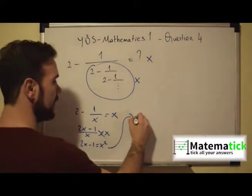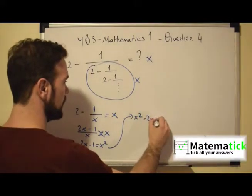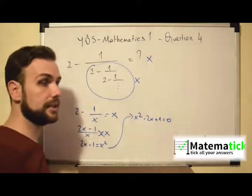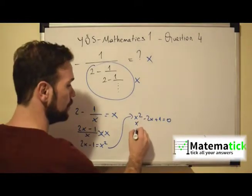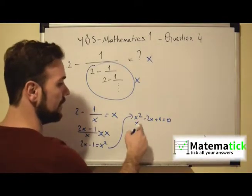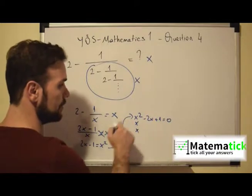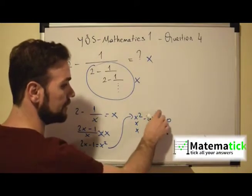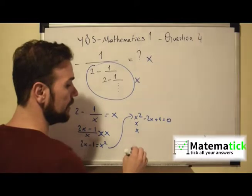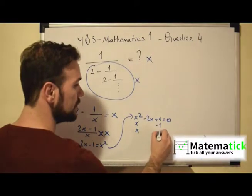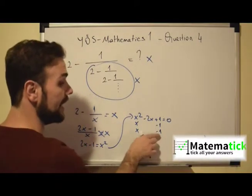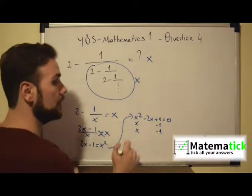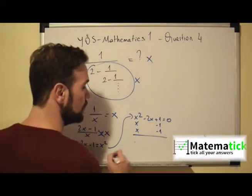We take everything to one side, giving us X squared minus 2X plus 1 equals 0. Now we are dealing with a quadratic equation. We factor it: X times X gives us X squared, and the factors for positive 1 are minus 1 times minus 1, which also add up to minus 2. So our factorization works.